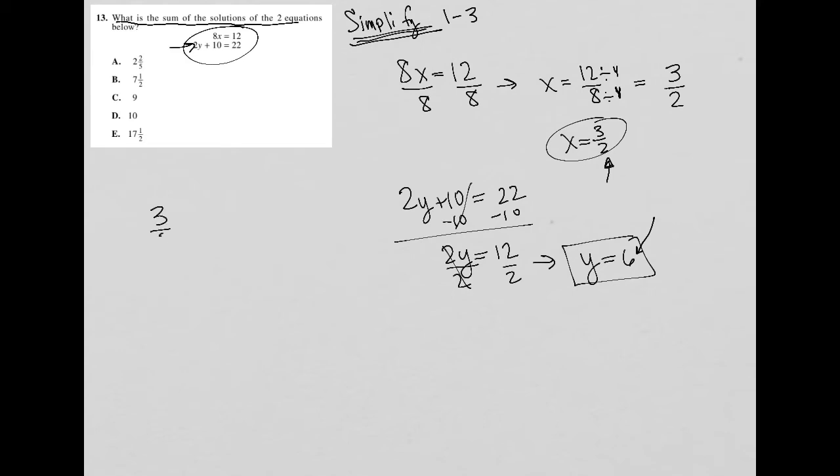So 3 over 2 plus, I'm going to call this 6 over 1, just to make them both fractions. Now in order to add fractions, I have to have a common denominator, which means on the 6 side, I'm going to multiply by 2 on top and bottom to make this 3 over 2 plus 12 over 2.